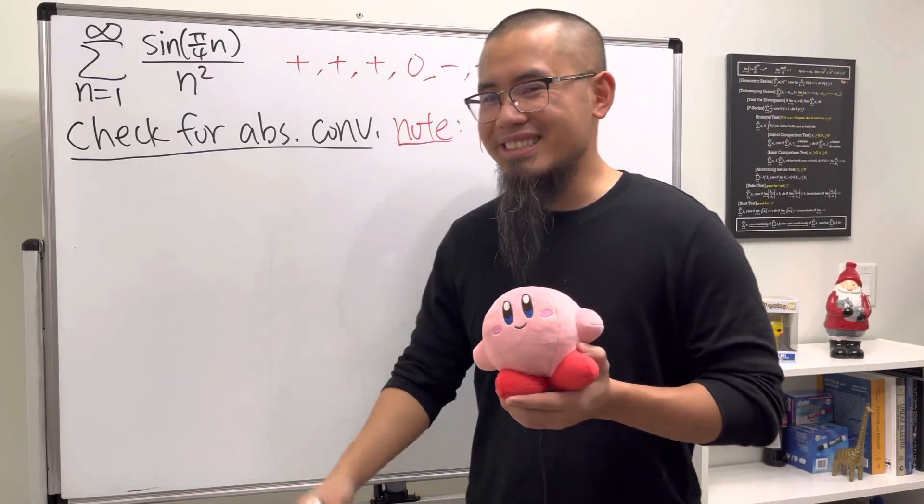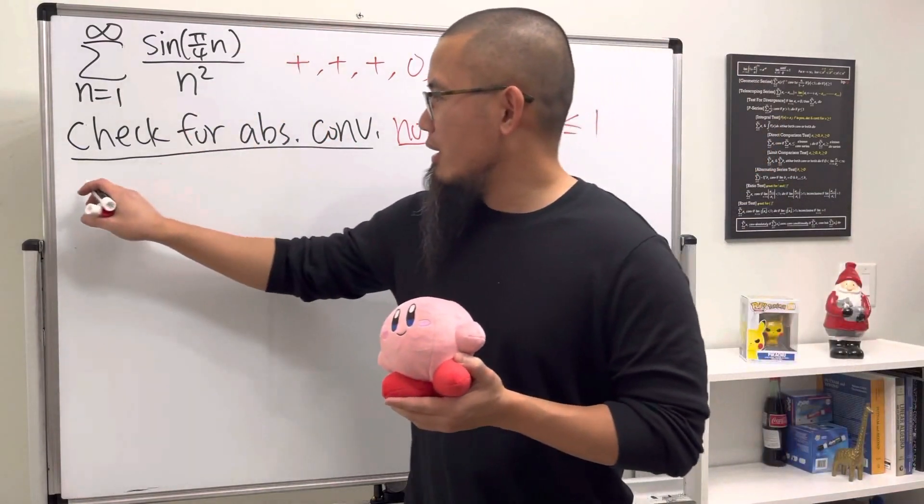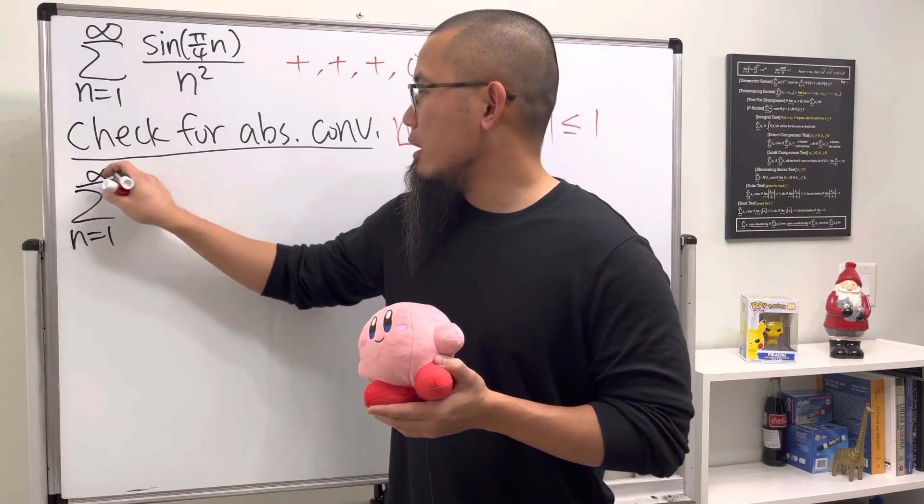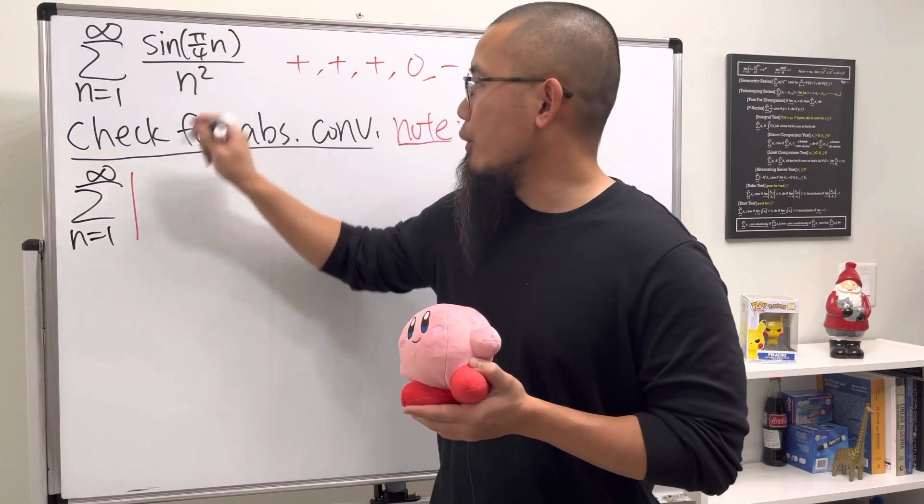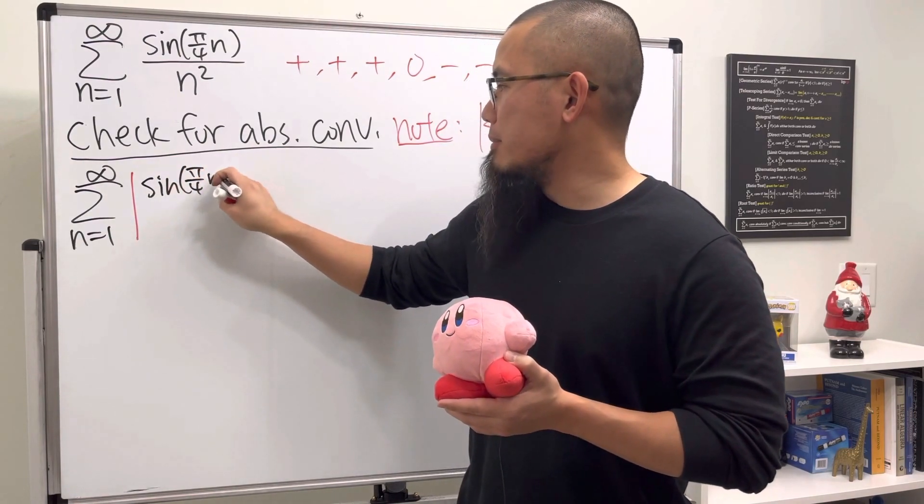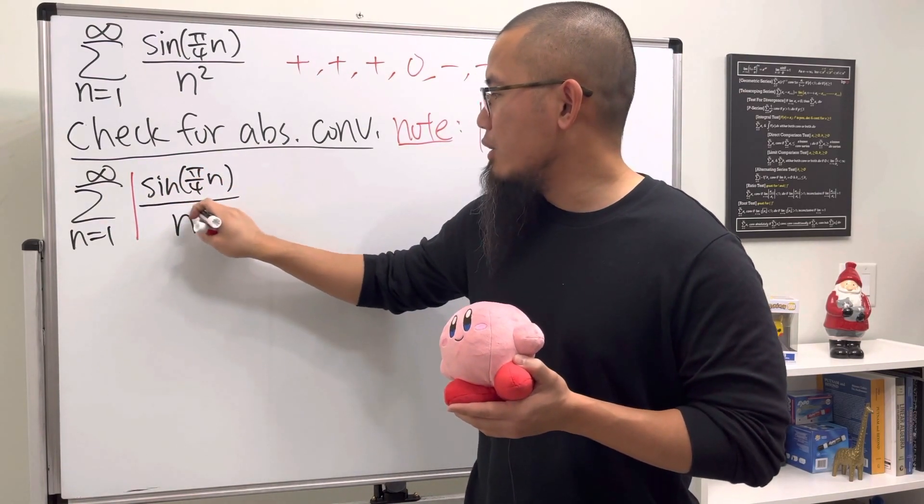Checking for absolute convergence, let's write this down again. We put the absolute value, and inside here we have sine of π/4 times n, divided by n to the second power.